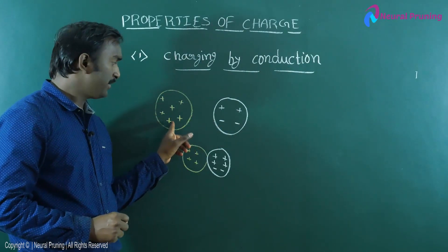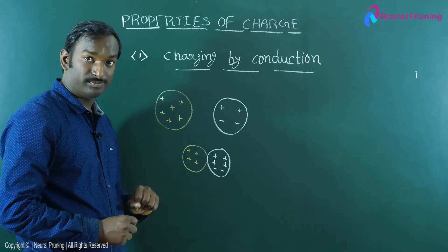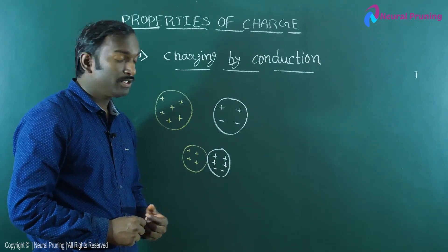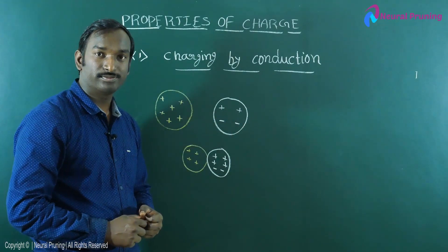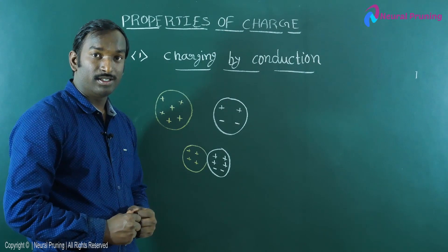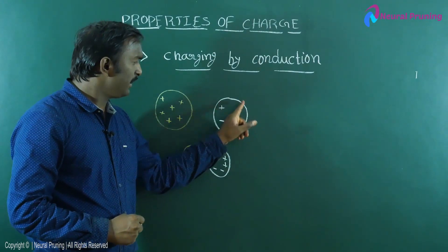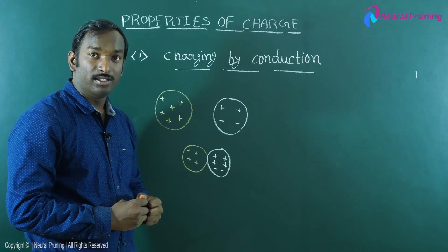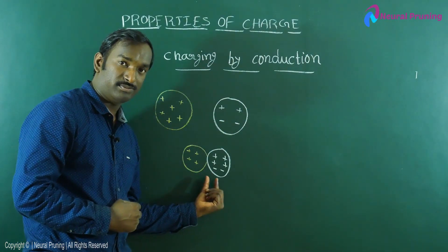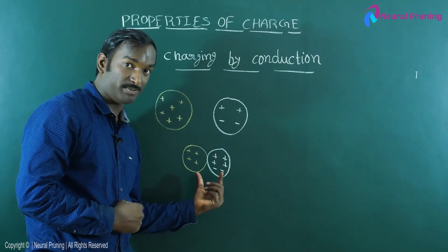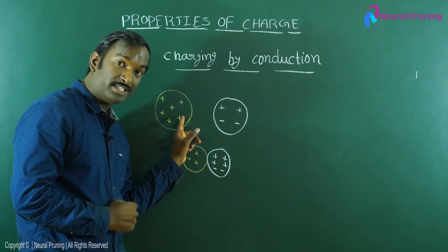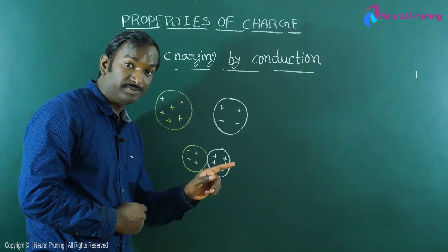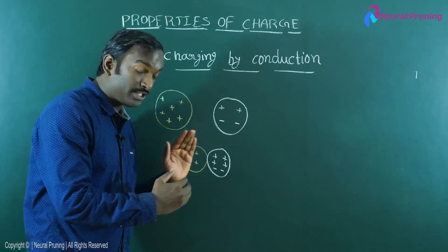Look at these two objects. One is a charged body with more positive charges — a positively charged body. The other is a neutrally charged body with equal numbers of positive and negative charges. When we connect these two bodies — one charged and one neutral — the flow of charges takes place from the charged body to the uncharged body, and this flow continues until the charges become equal.